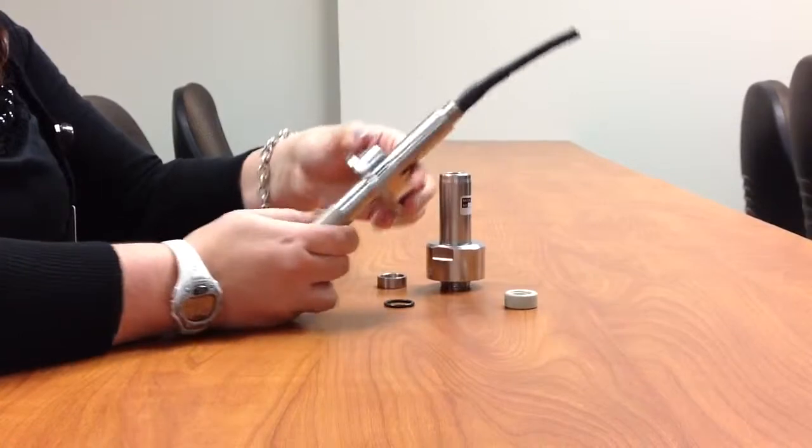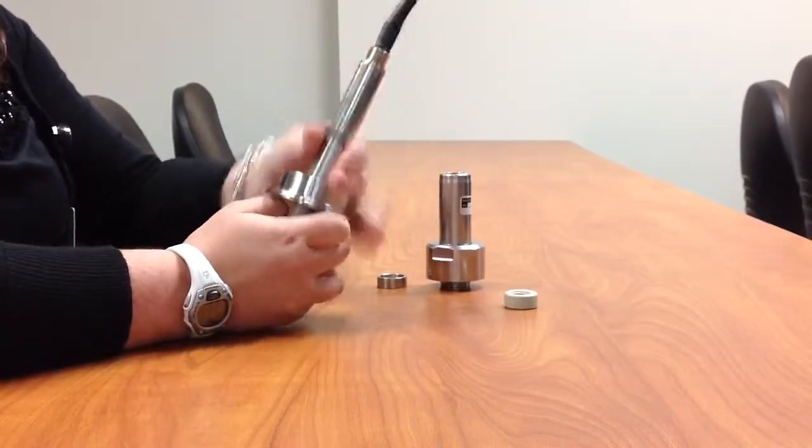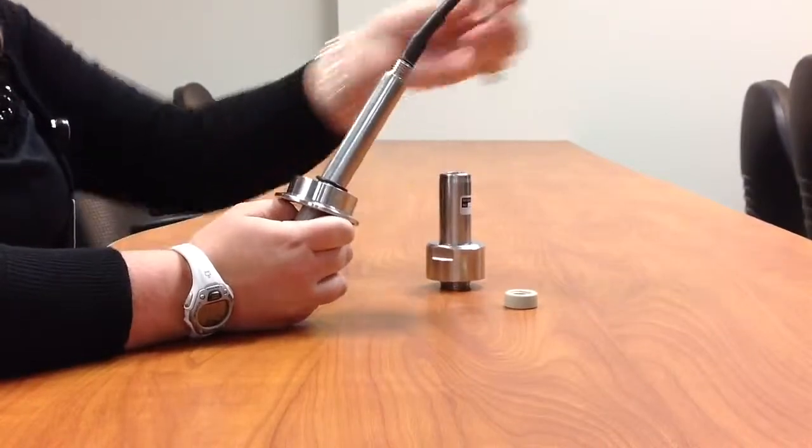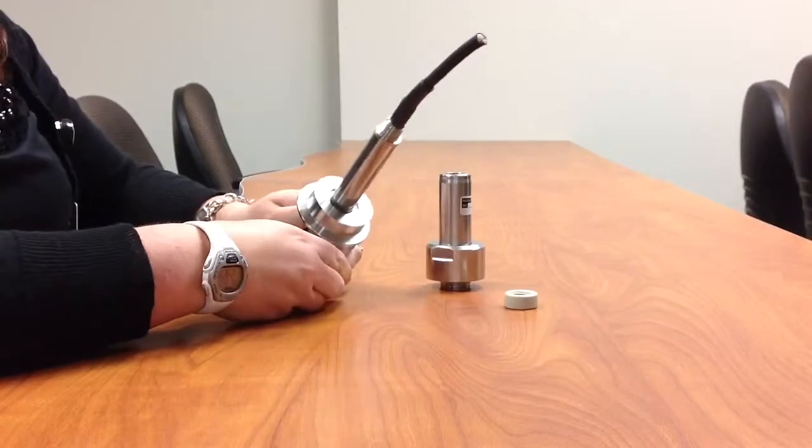First, your process connection piece goes on your sensor, then the O-ring, then the sealing ring, and they basically just sit right up in there.